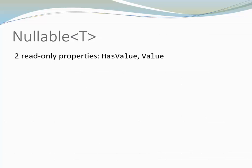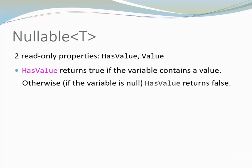The type nullable provides some useful functionality. There are for example two read-only properties: HasValue and Value. The property HasValue is of type boolean. It returns true if the variable contains a value. Otherwise HasValue returns false.